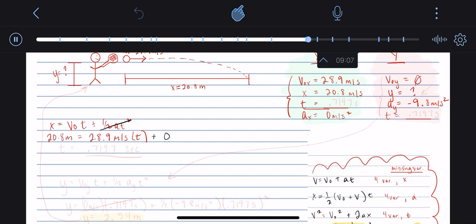So I'll just continue solving this equation, plug it into my calculator, solve for time, and I get t equals 0.7197 seconds. Now that I've found the value for time, I can use that in both sides of my table. 0.7197 seconds.